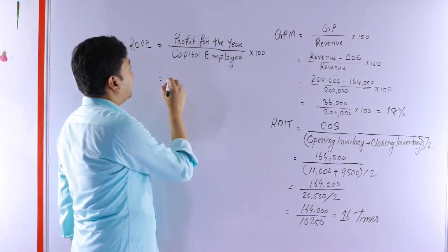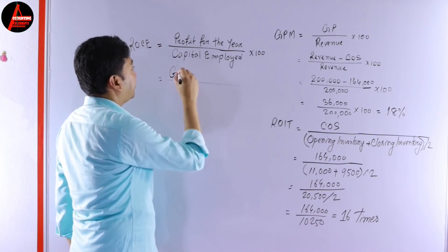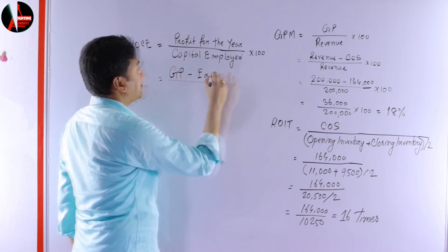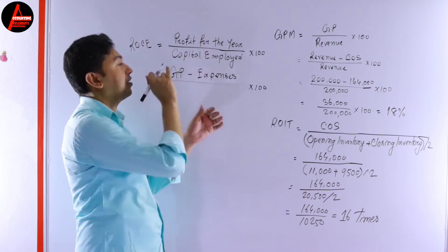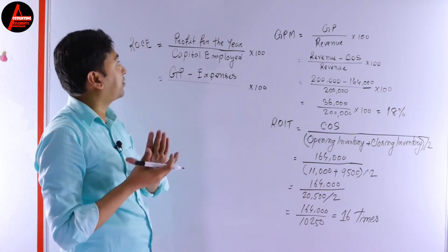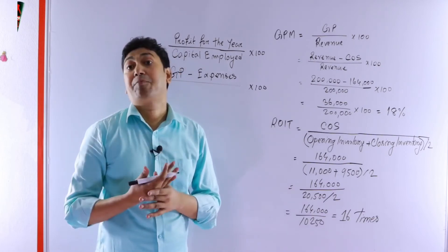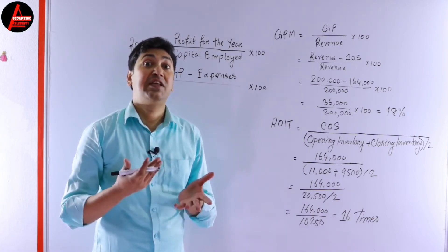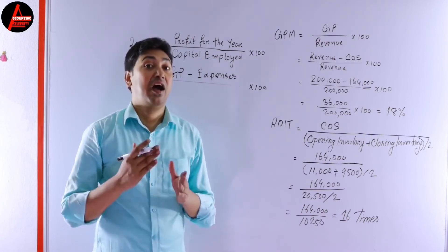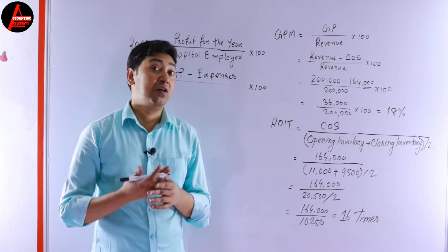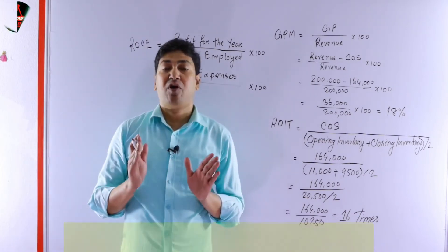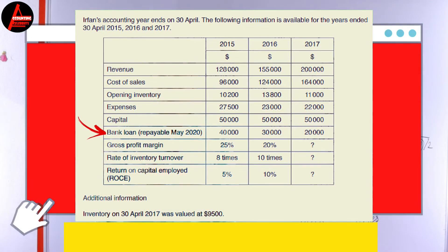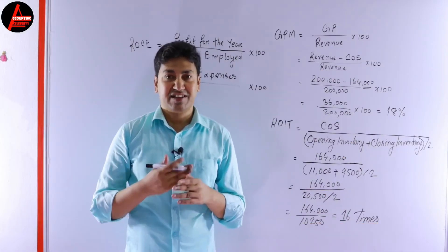So profit for the year equals gross profit minus expenses, times 100. Now for capital employed: capital employed equals capital plus long-term liabilities. In this question we have only one long-term liability — the bank loan of $20,000. We also have capital of $50,000. So capital employed equals capital plus bank loan.